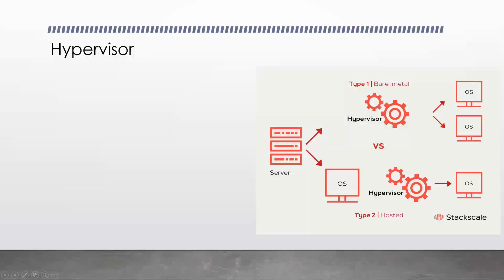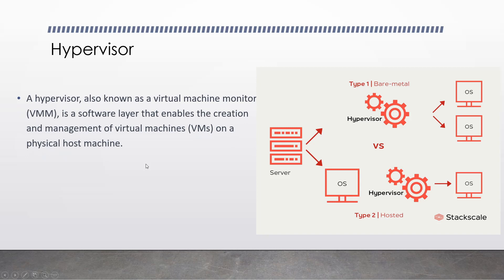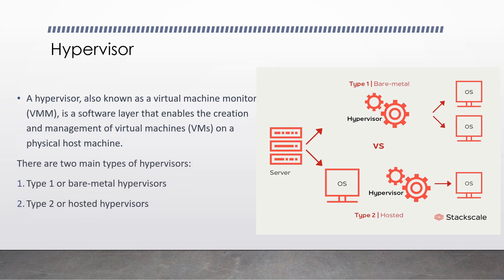The next topic is hypervisor. A hypervisor, also known as a Virtual Machine Monitor or VMM, is a software layer that enables the creation and management of virtual machines on a physical host machine. The hypervisor sits between the physical host machine's hardware and the guest operating systems running in each VM, providing a layer of abstraction that allows multiple VMs to share physical resources such as CPU, memory, storage, and network interfaces.